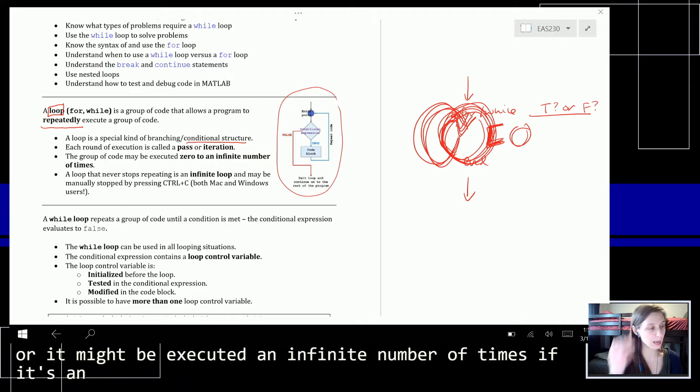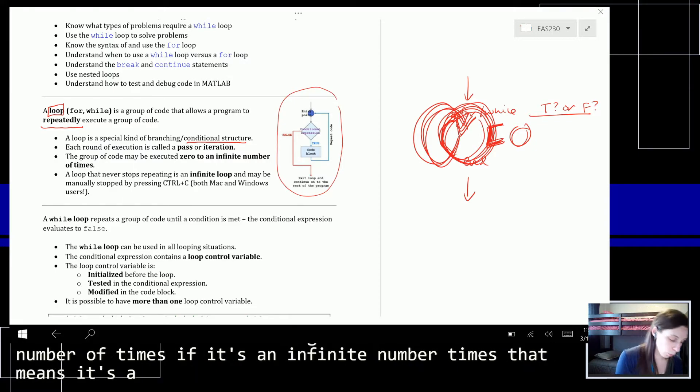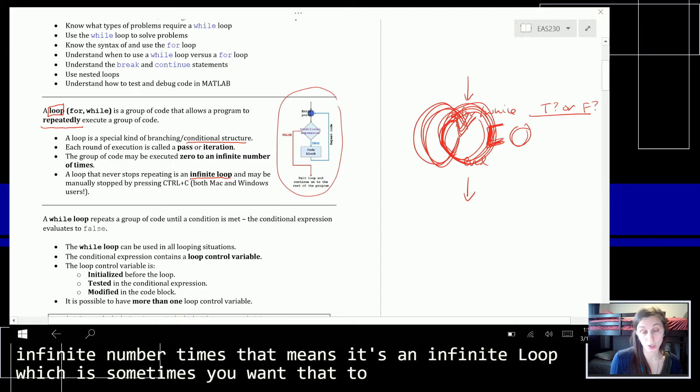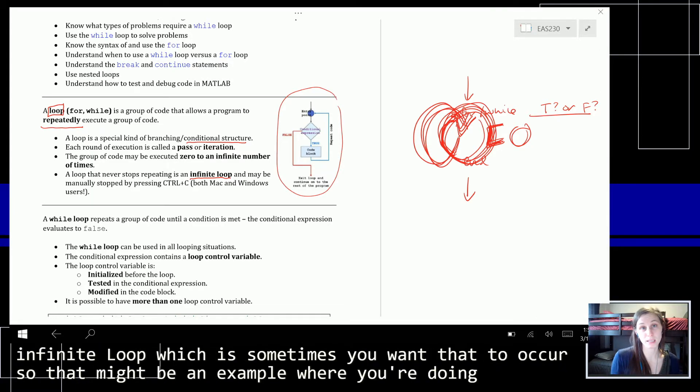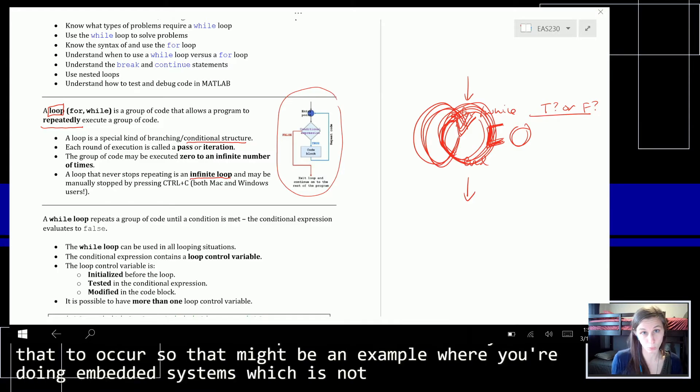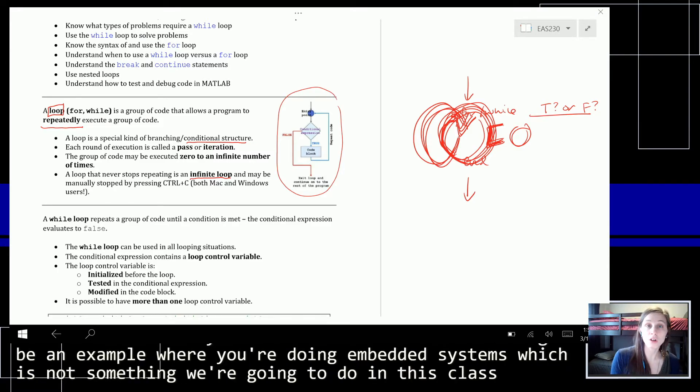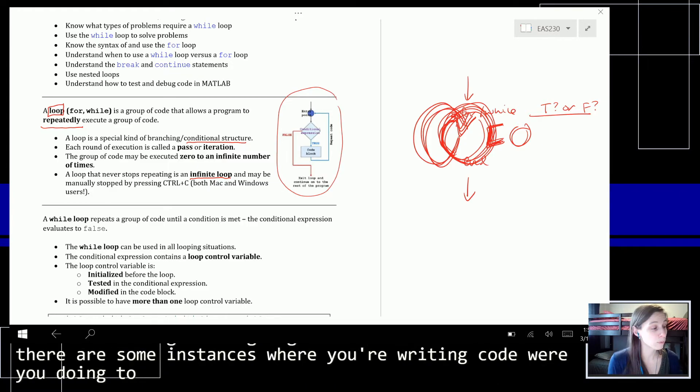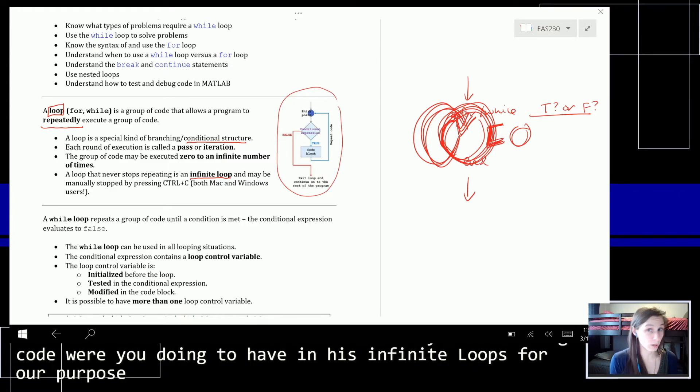If it's an infinite number of times, that means it's an infinite loop, which sometimes you want that to occur. That might be an example where you're doing embedded systems, which is not something we're going to do in this class. But there are some instances where you're writing code where you do want to have infinite loops. For our purposes, you do not want to have infinite loops.